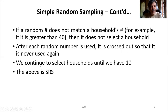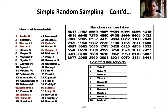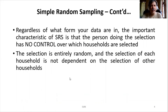We continue to select households until we have 10. This is called simple random sampling, or shortly SRS. Once I have 10 households I stop the selection.